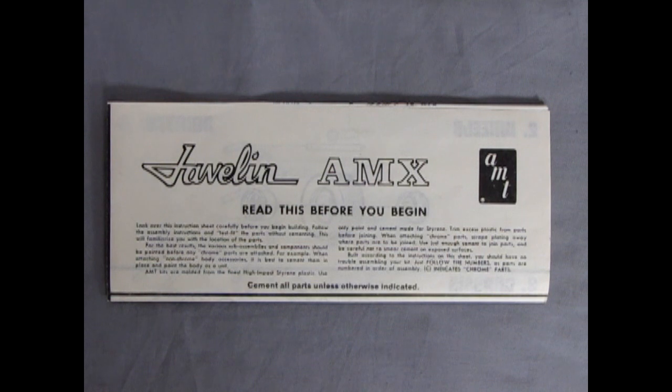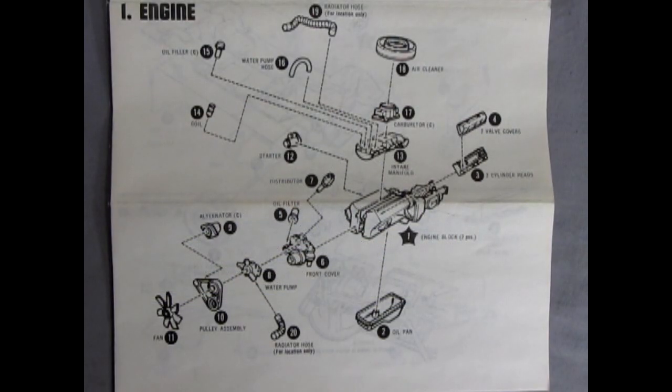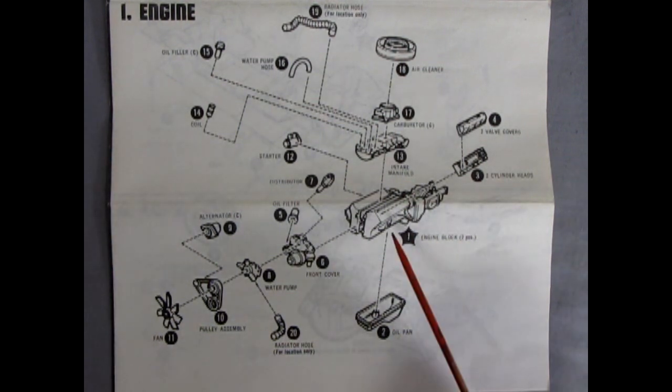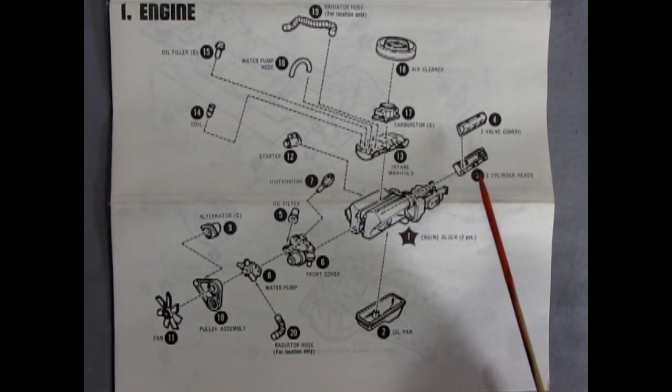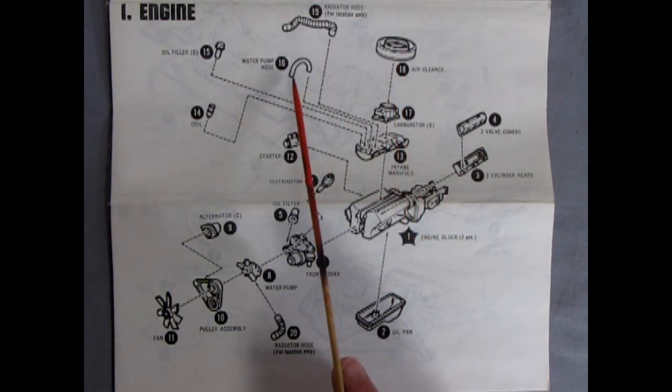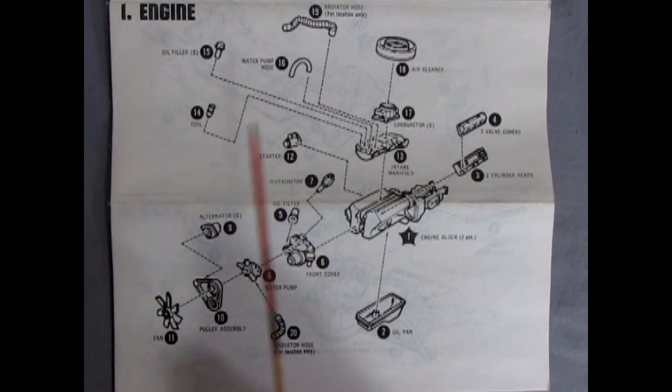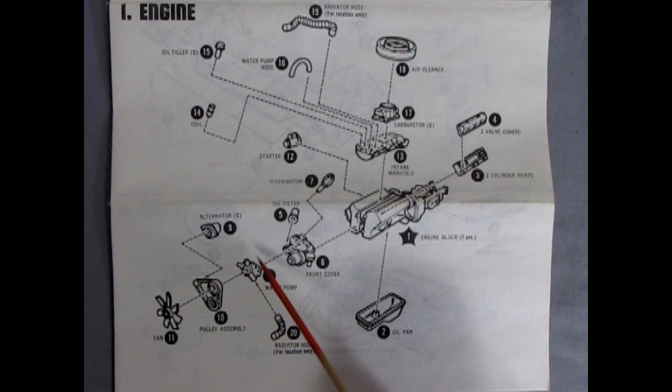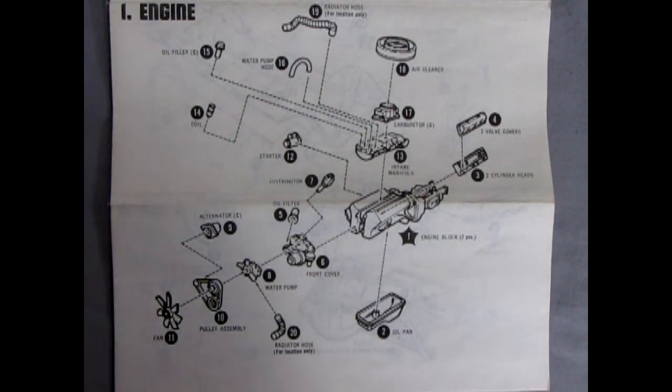Now we can take a look at the AMT Javelin AMX instruction sheet. Right away, we start with the engine assembly, which includes, of course, our right and left hand engine block with the transmission molded in place, cylinder heads, valve covers, intake manifold, carburetor, air cleaner, radiator hose, water pump hose, oil filter, coil, starter, distributor, front cover, alternator, water pump, pulleys, and the fan and our oil pan wrapping it all up.